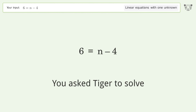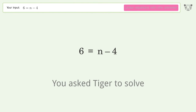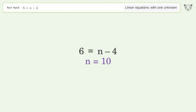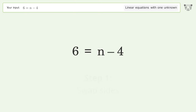You asked Tiger to solve this — it deals with linear equations with one unknown. The final result is n equals 10. Let's solve it step by step: swap sides.